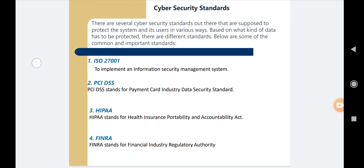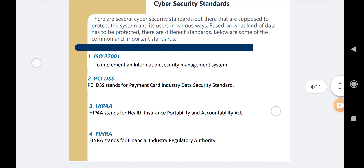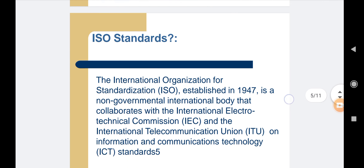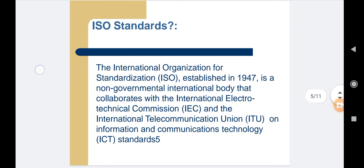So these are the four important cyber security standards. Now let's look at the ISO standard. ISO is the International Organization for Standardization. It was established in 1947 and is a non-governmental international body that collaborates with the International Electro-Technical Commission (IEC) and the International Telecommunication Union (ITU) on Information and Communication Technology (ICT) standards.